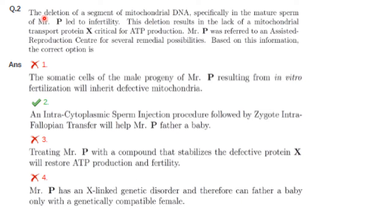The question mentions a lack of mitochondrial transport protein X — not a defective protein X — so option 3 is not supported. Option 4 states Mr. P has an X-linked genetic disorder, but the question clearly states the deletion is in mitochondrial DNA. So X-linked genetic disorder does not come into picture.